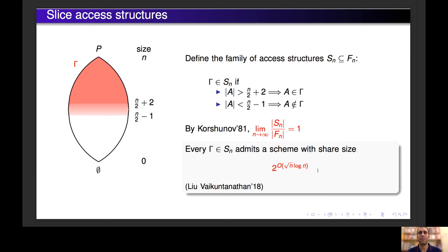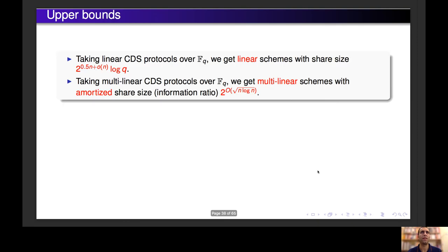The schemes we constructed here are not linear, and we obtain in a similar way upper bounds for linear secret sharing schemes. This was done by taking the same construction but with linear CDS protocols. Taking multi-linear CDS protocols, we got multi-linear schemes with amortized share size 2^{O(√(n log n))}.